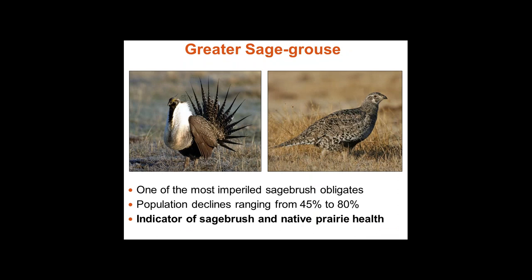The greater sage-grouse are one of the most imperiled sagebrush obligates of North America, with population declines ranging from 45 to 80 percent throughout North America — some areas even higher. Sage-grouse are really a good indicator of sagebrush and native prairie health. They depend on sagebrush throughout their entire life cycle — it's their main source of food especially in winter, they nest in it, and use it as protection from predators. If sage-grouse are declining in a certain area, that's a good indicator that something on the land is not doing well.